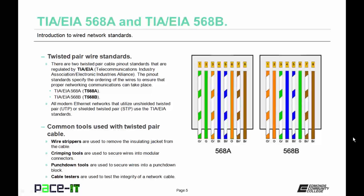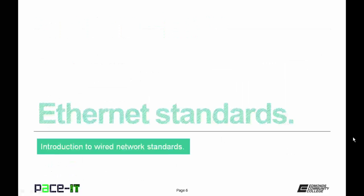All modern Ethernet networks that utilize unshielded twisted pair (UTP) or shielded twisted pair (STP) should use the TIA-EIA standards. As a quick refresher for twisted pair wiring, here are some common tools you will need: wire strippers to remove the insulating jacket, crimping tools to secure wires into modular connectors, punch down tools to secure wires into punch down blocks, and cable testers to test the integrity of the network cables.